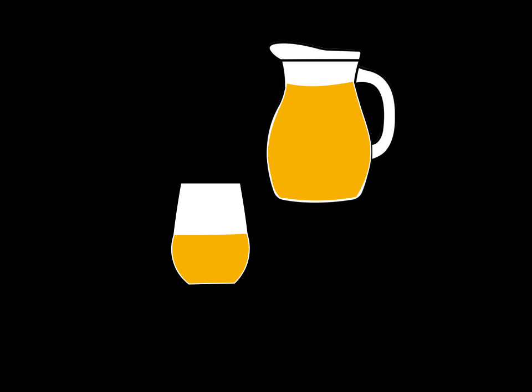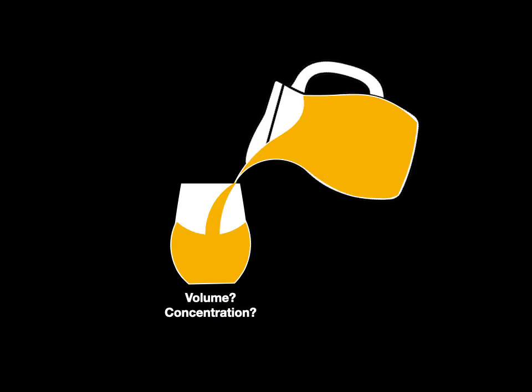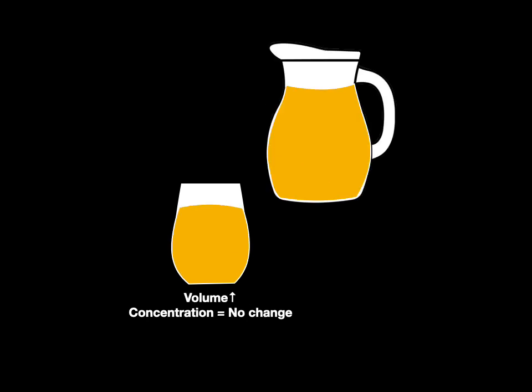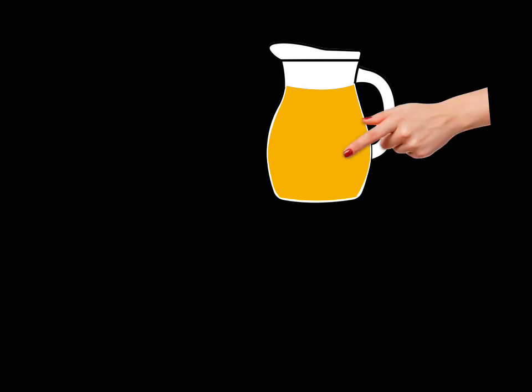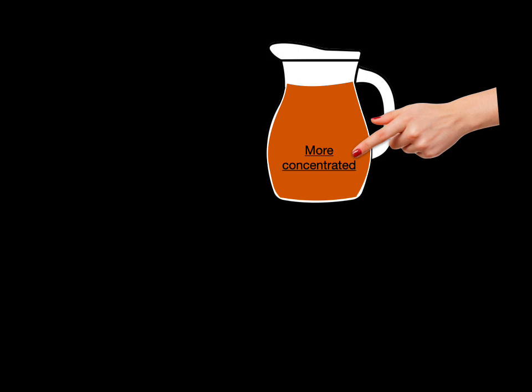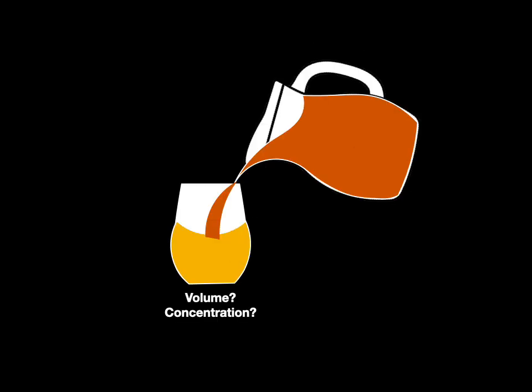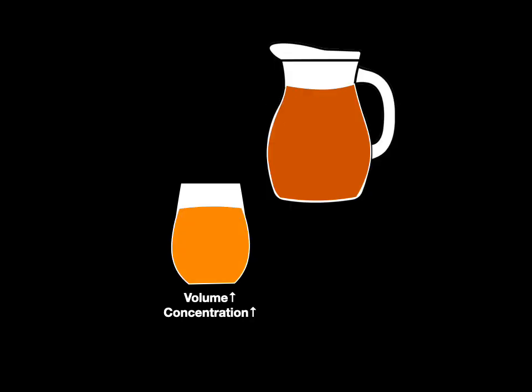Here's a glass of orange juice and the original jug — you pour some more juice into the cup. What will happen to the volume and concentration of the juice in the cup? Obviously the volume goes up, but the concentration doesn't change because the jug and the cup are the same concentration. But now let's take this jug of juice, make it more concentrated, and pour that into the original cup. What happens to the volume and concentration now? The volume goes up because we've added more, but also the concentration goes up.